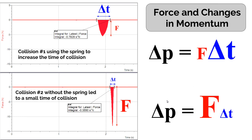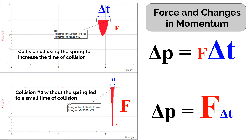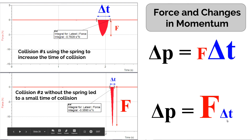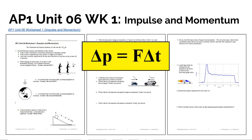Comparing both collisions: the first used a spring to increase contact time, producing a small force over a long time; the second had no spring, producing a large force over a short time. Both demonstrate that you can change an object's momentum with a small force over a long time, or achieve a similar change in momentum with a large force over a short time. For homework, you'll use the impulse-momentum equation to analyze different situations both qualitatively and quantitatively.